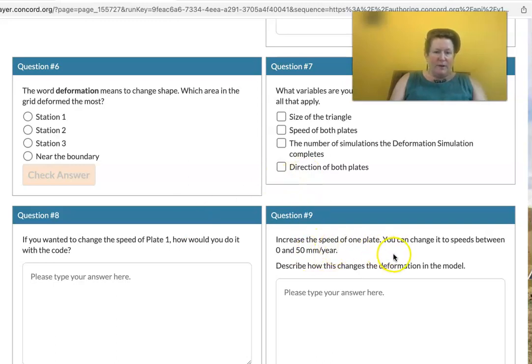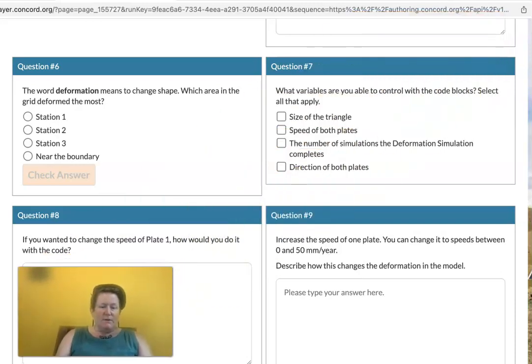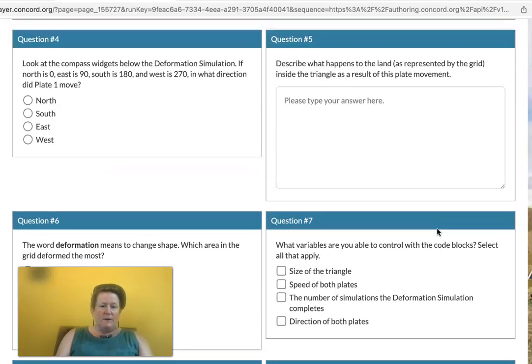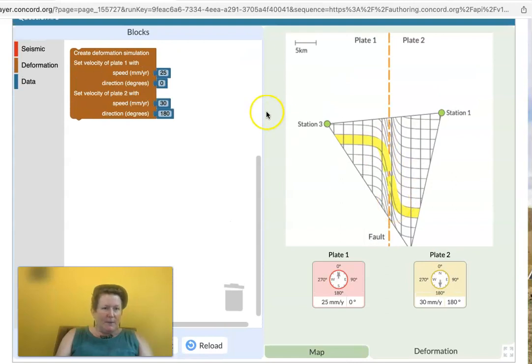Increase the speed of one plate. You can change it to speeds between 0 and 50 millimeters a year. Describe how this change changes the deformation of the model. So how does that change in speed, playing around with one of these millimeters per year, how does that change what happens over here with the deformation?